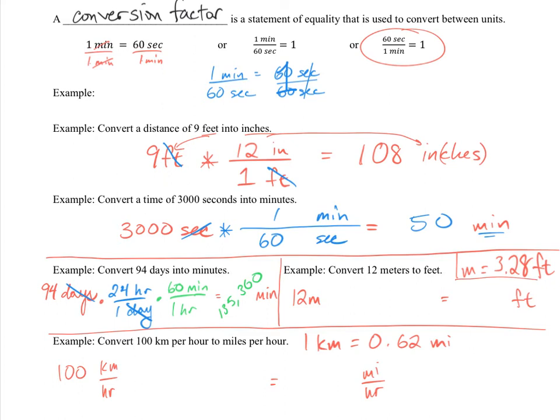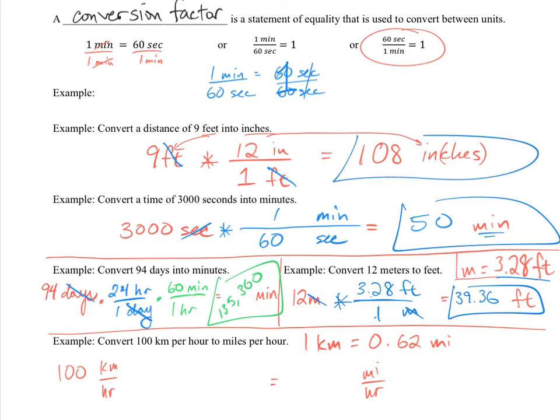And again, we have to set up the fraction with the unit we want canceled in the bottom. So 1 meter, that way the meters will cancel. And in the top, the other unit over here, 3.28 feet. And when you multiply 12 times 3.28 and divide it by 1, you get 39.36 feet. I'm going to go back and circle all these answers because I have not been doing that. There we go.